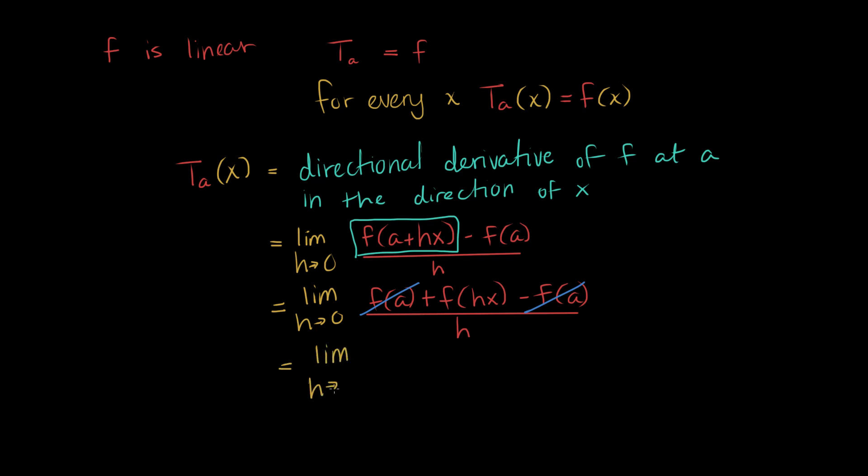The limit as h approaches 0, and now notice, this term, again, we have a scalar inside, that because F is linear, we can bring it to the outside. We can say that F of h times x is the same as h times F of x, all divided by h.